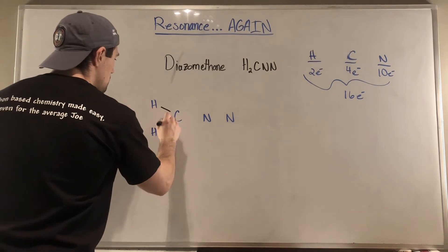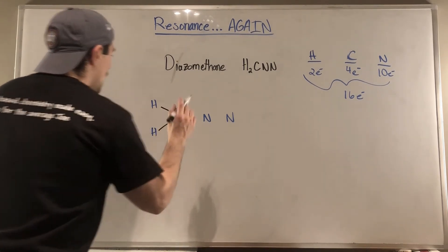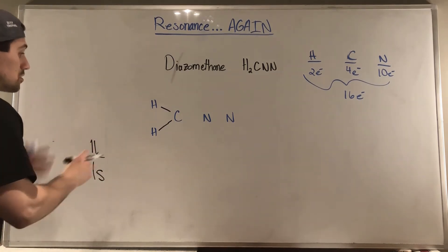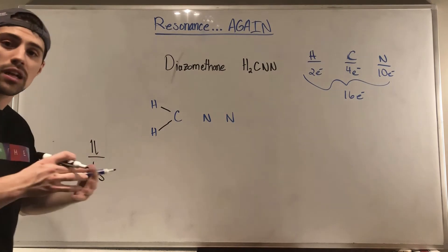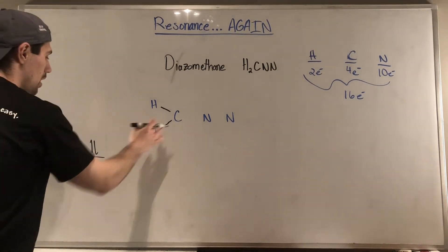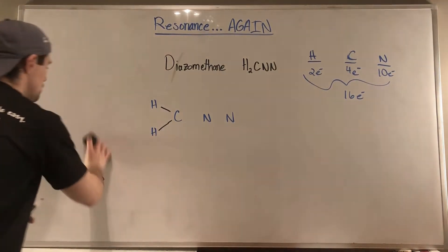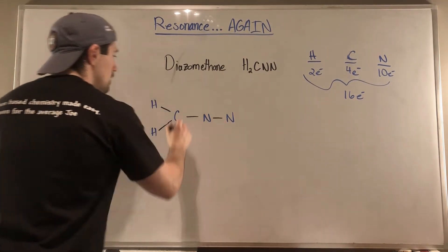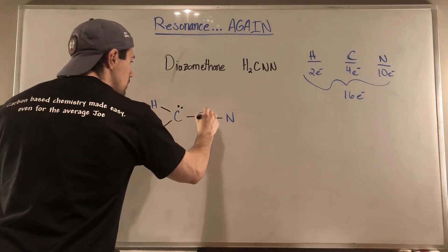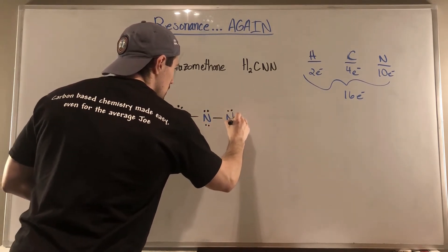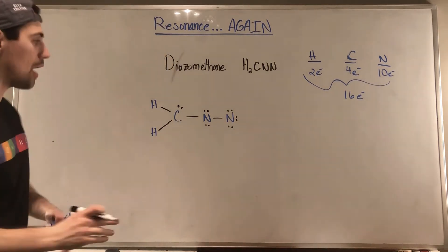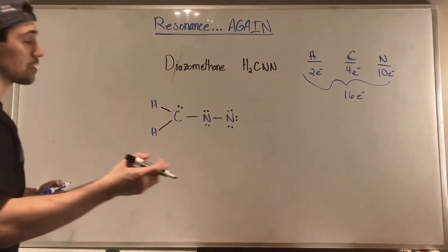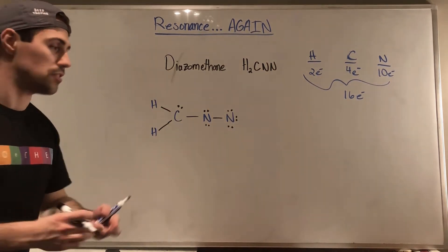Carbon is just single bonded to the hydrogens, since hydrogen only needs two electrons in its 1s shell — both hydrogens are set. Let's connect everything and lone pair everybody up. Counting the electrons: 2, 4, 6, 8, 10, 12, 14, 16, 18, 20 — too many electrons. We have four too many, so we need to make two double bonds to get back to sixteen.